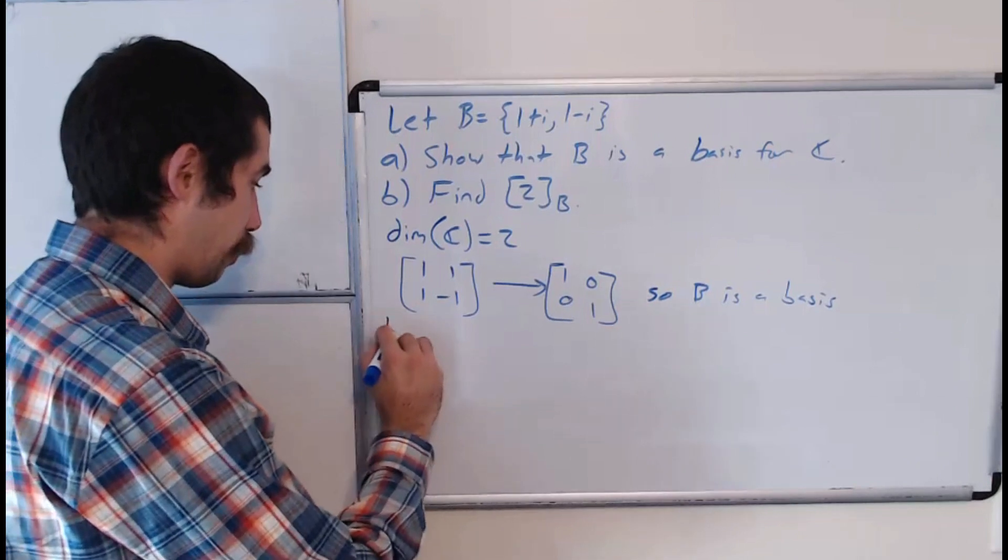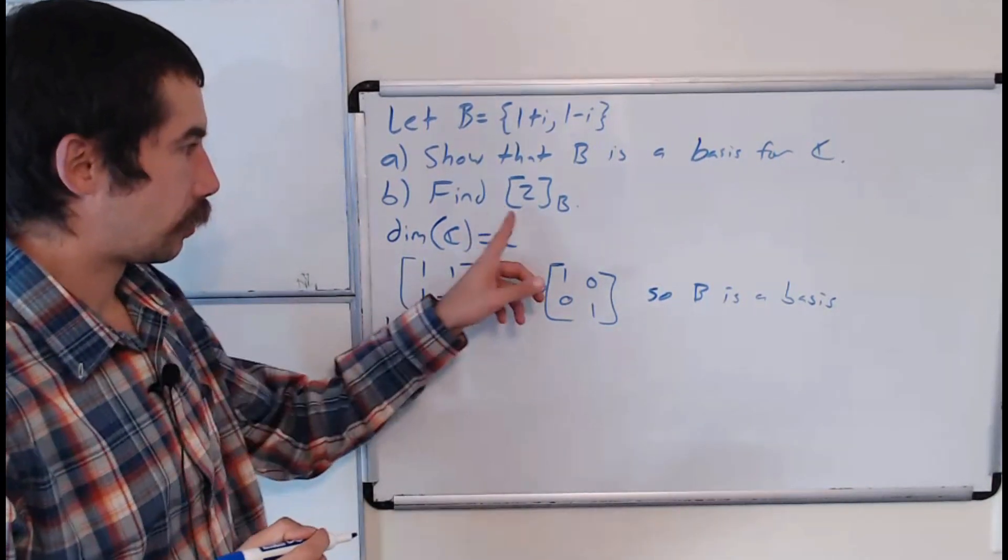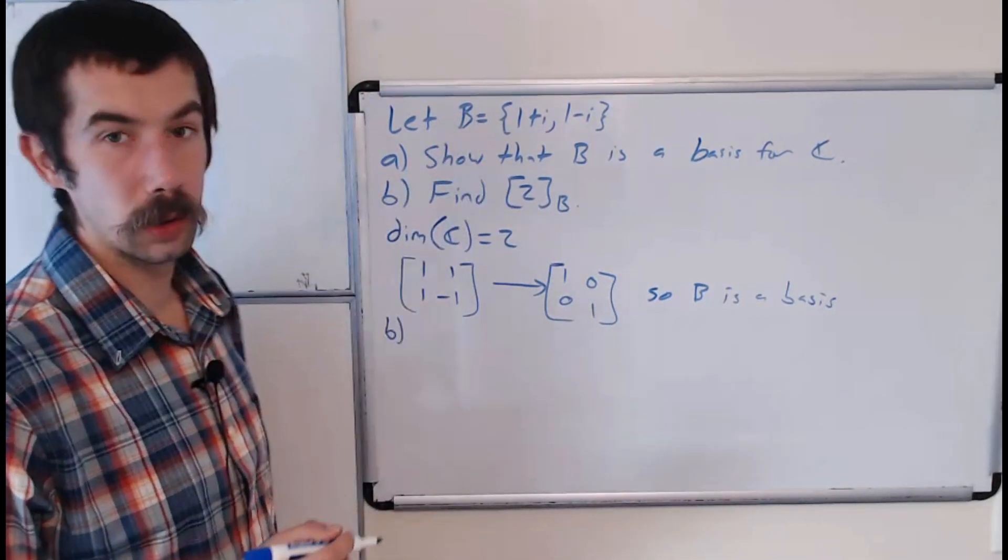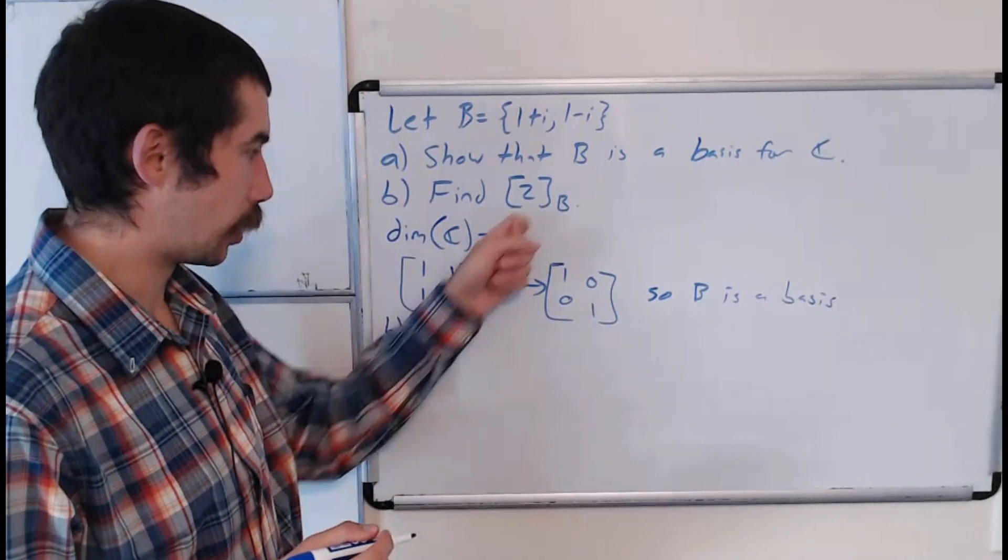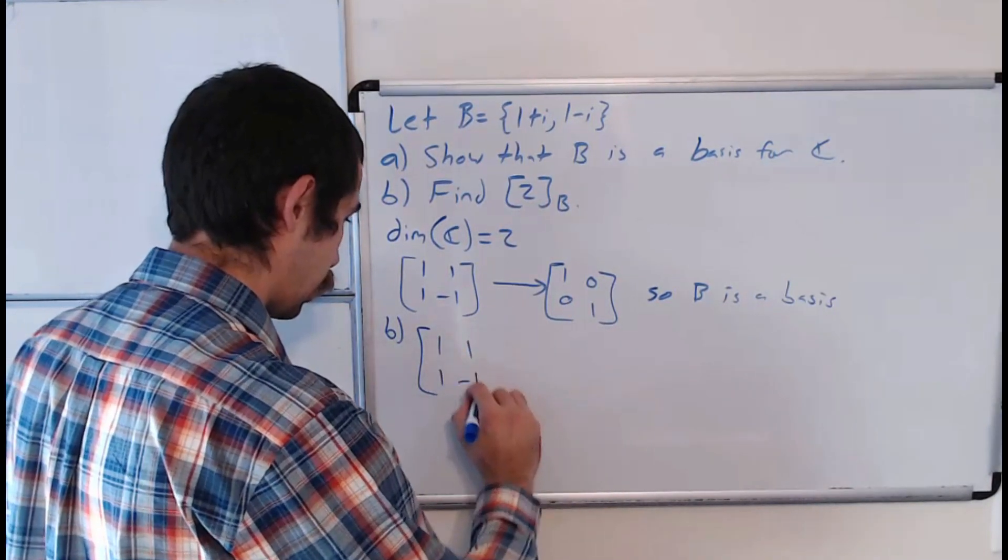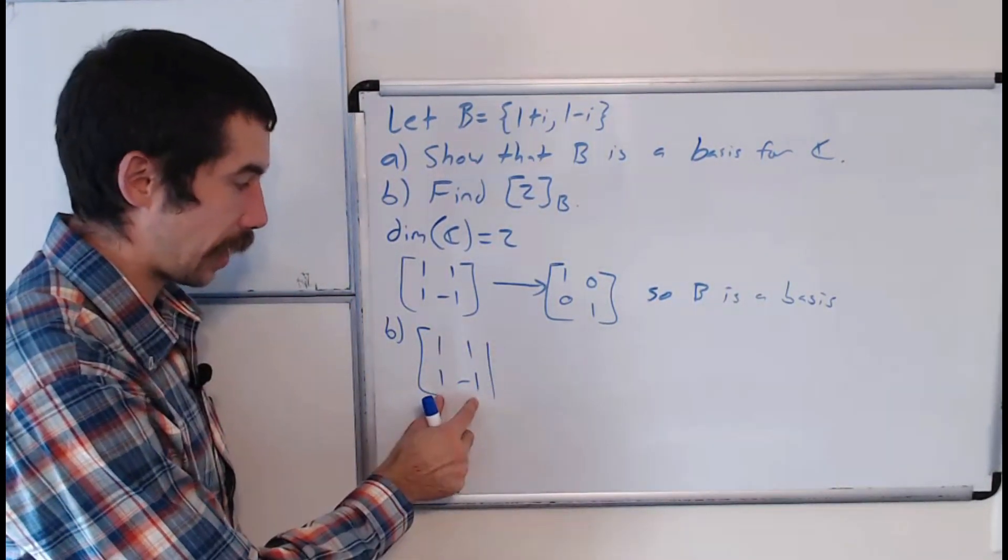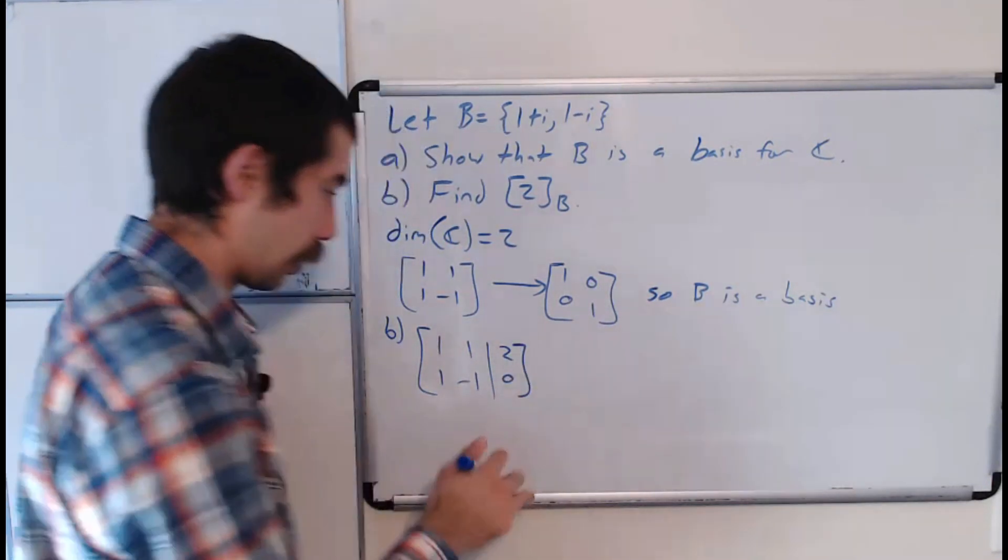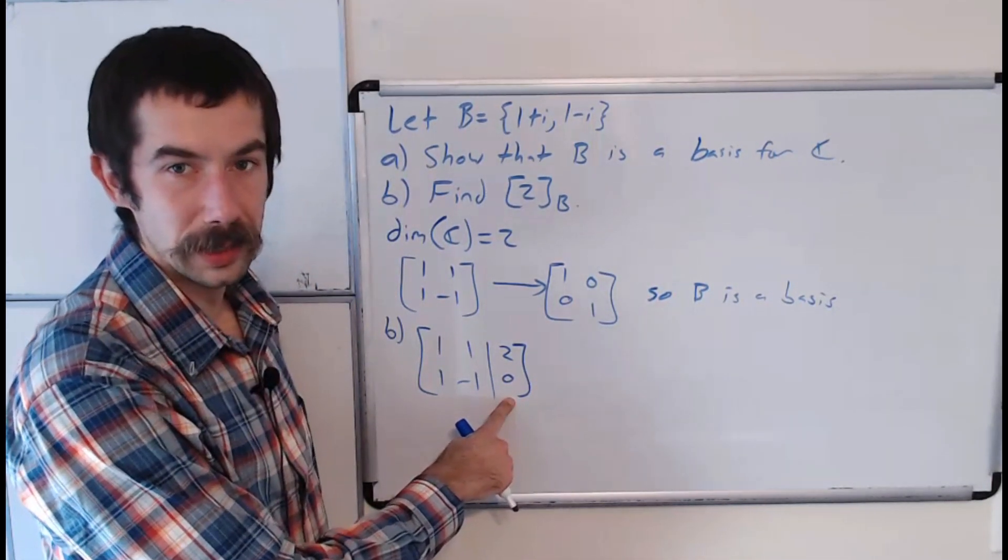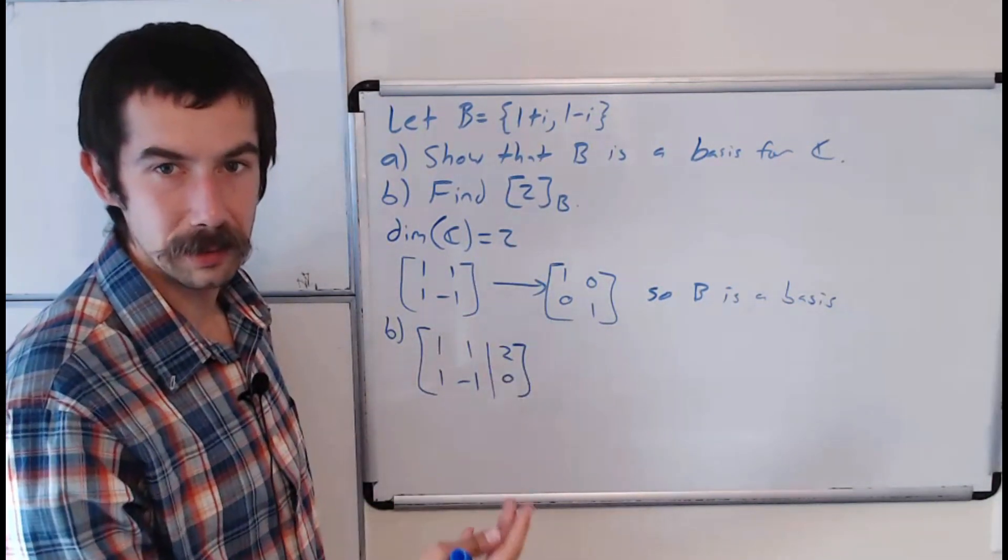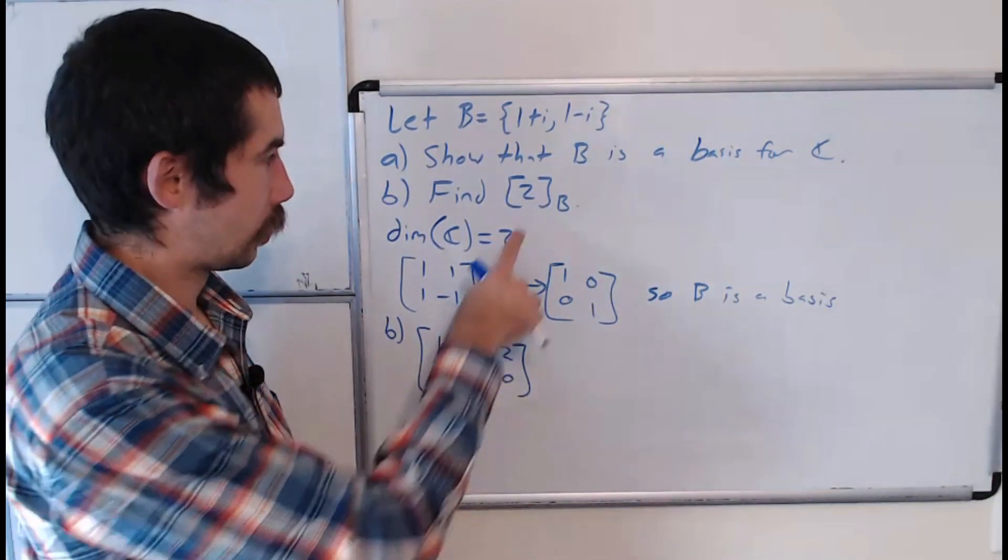And for part b, find the B-coordinate vector for the number 2. Basically we take this same matrix and write [2, 0] because this is the coordinate vector with respect to the standard basis for 2.